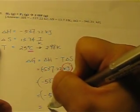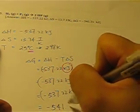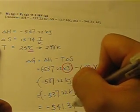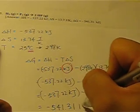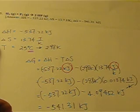So negative 537.22 minus 4.09452. My answer is negative 541.31. I am just going to take two decimal places. And my unit is kilojoules. Which matches my answer right here.